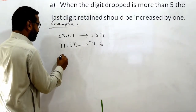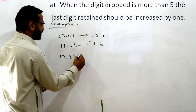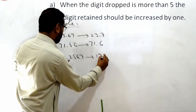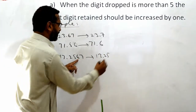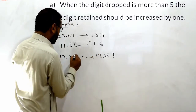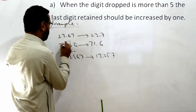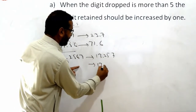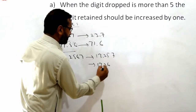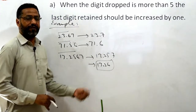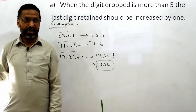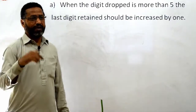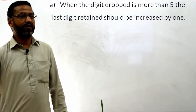اسی طرح سے 13.2567 — اگر اس کو دو decimal digits تک کرنا ہو تو پہلے 7 کو drop کریں گے، 5 is greater than 5، تو 6 سے 7 ہو جائے گا۔ پھر اب 7 کو drop کریں گے: 7 is greater than 5، تو 13.26 ہو جائے گا — this is the correct answer according to significant figure rules. یہ پہلا rule تھا کہ جب digit greater than 5 ہو تو retain digit میں ایک add ہو جائے گا.